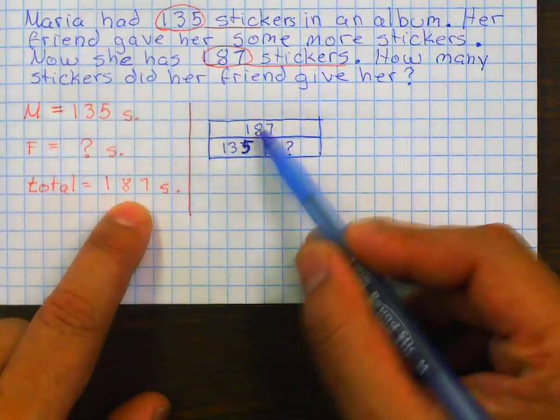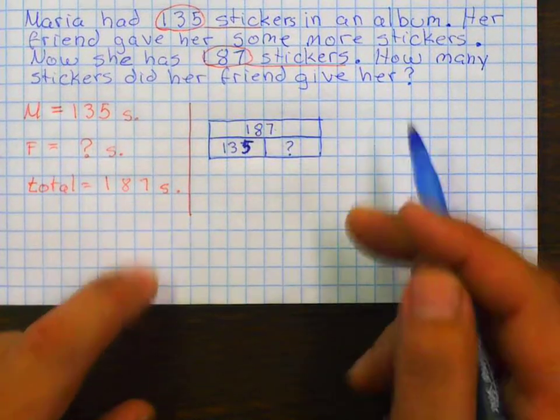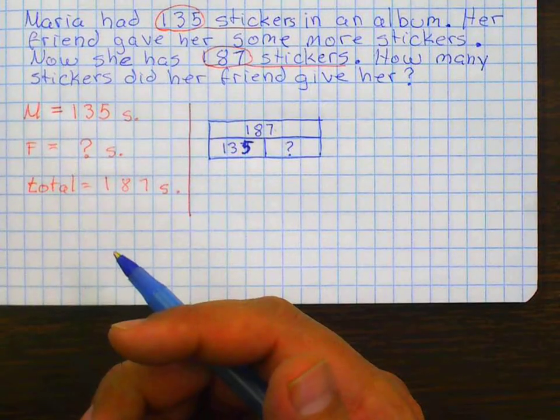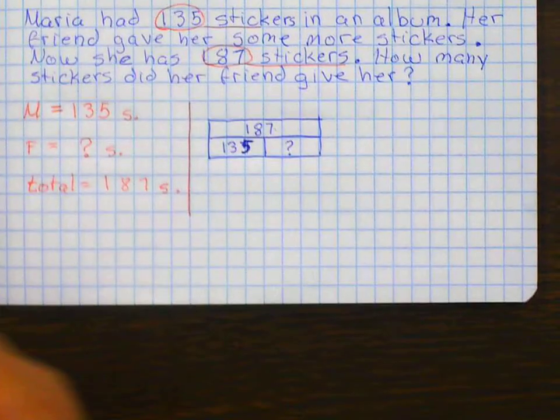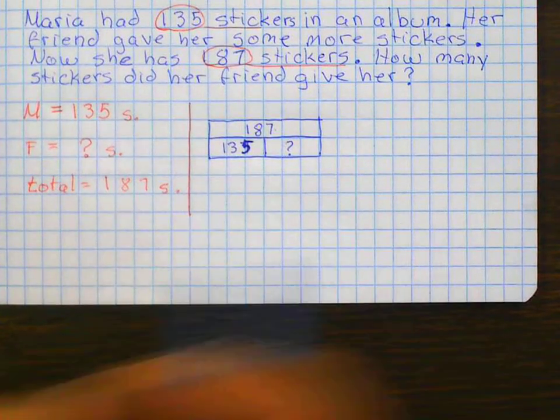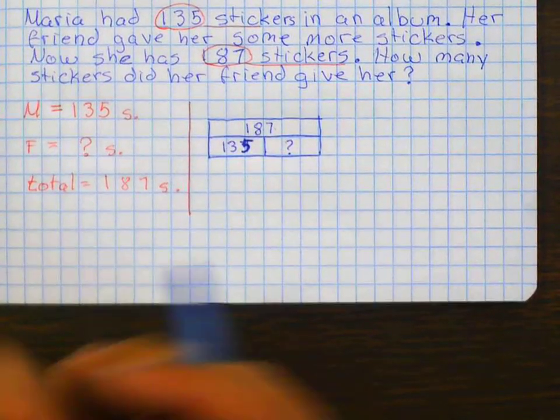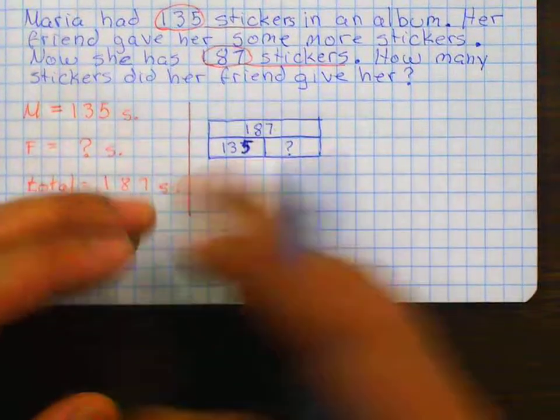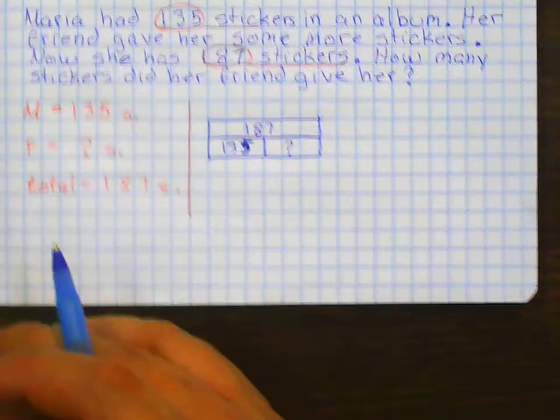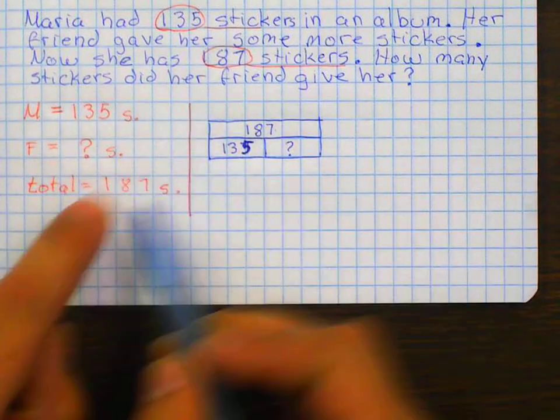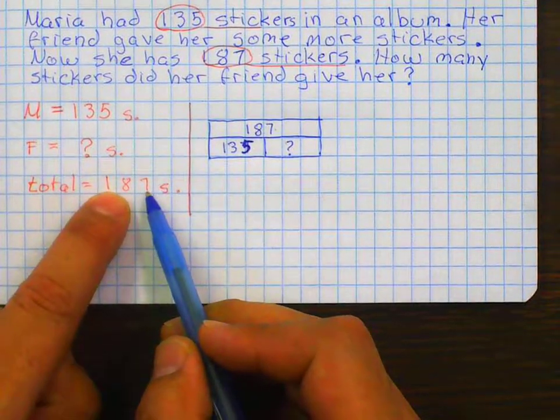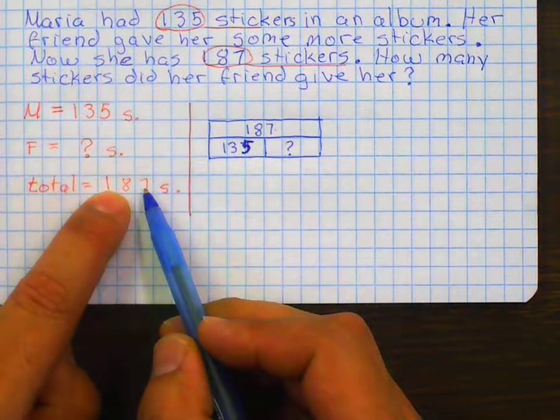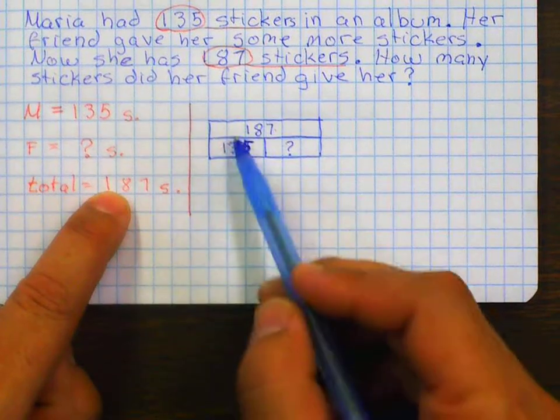It's like saying, I have 10 apples on the table. And there are three that are green. The rest are red. Well, I cannot add 10 apples plus three apples because all I have on the table is 10. That's my total. I can't have more because that's all on the table. In this case, it's the same. Her total number of stickers now is 187. She cannot have more than 187. That's why you cannot add these two numbers.